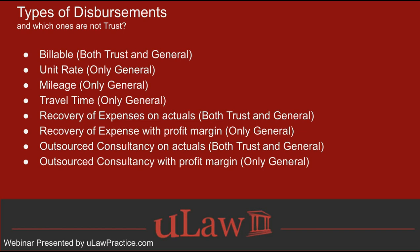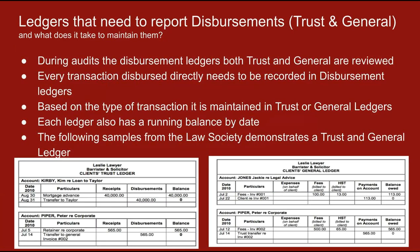Both trust and general can be used for actuals — any recovery of expenses at actual amount. If an application fee is $200, you charge your client only $200. You can do it out of trust directly for $200, or out of your general and recover exactly that $200. Recovering expenses on actuals can be done from both trust and general. Billable can also be done from both. Any outsourced consultancy at actual rate can be done at both trust and general level. There can never be a disbursement that can only be made out of trust, since not everyone has a trust account.